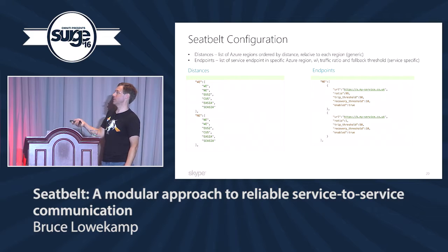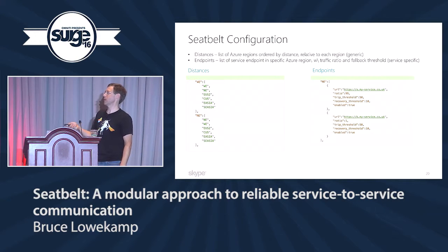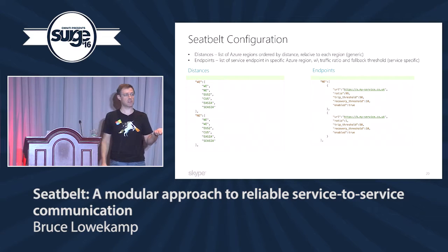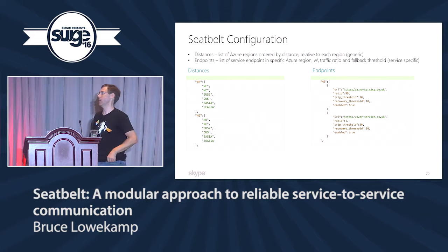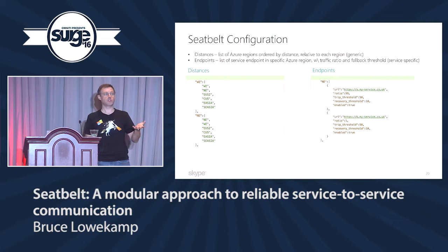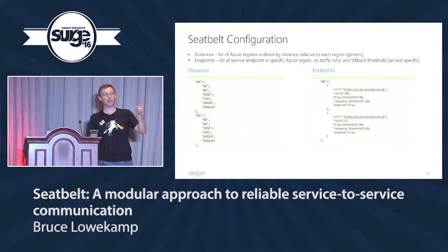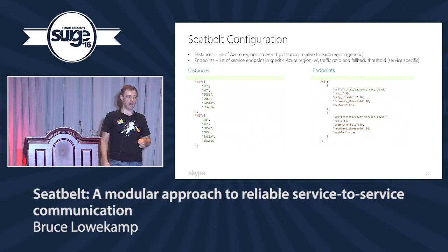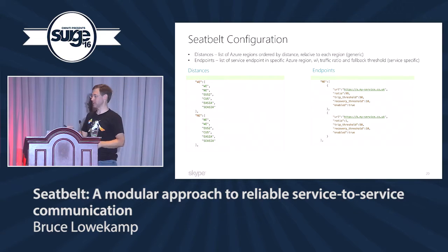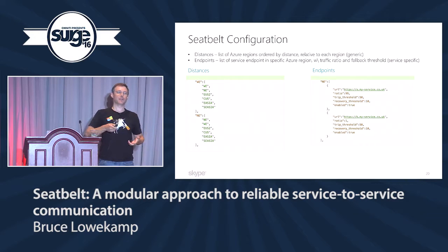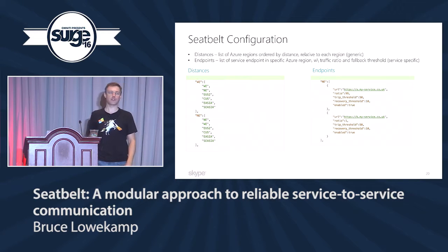We use JSON configuration with a few parameters: ratio — how much traffic goes to each deployment; trip threshold — what triggers the circuit breaker to open and close; and whether a deployment is enabled, because sometimes failures don't look like failures to the client and you need to manually say in configuration: stop talking to them.